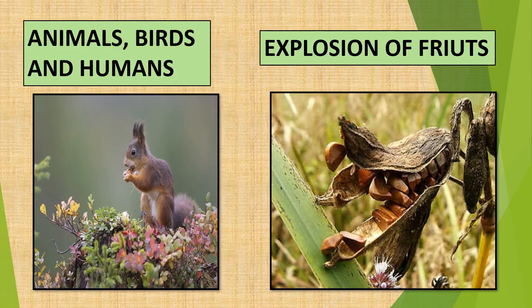Many fruits and seeds are spread by animals, birds, and humans. Humans and animals eat fruits and throw away their seeds, which grow into new plants. Squirrels collect nuts and bury them, and when conditions become favorable, these nuts grow into new plants. Birds eat fruits, and sometimes seeds come out in their droppings undigested. Some seeds get stuck to their beaks while eating fruits, and when birds rub their beaks, the seeds fall down and later grow into new plants.